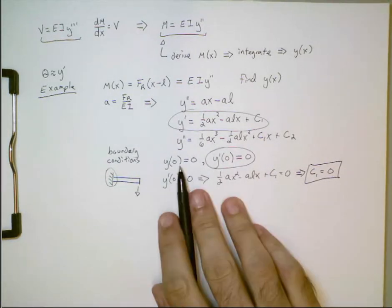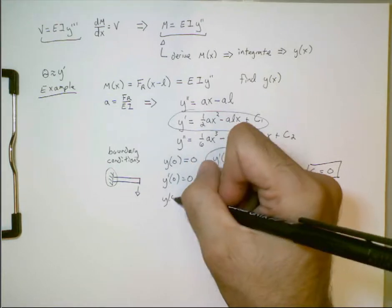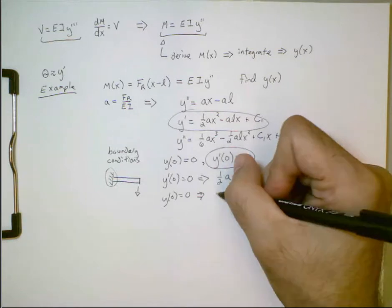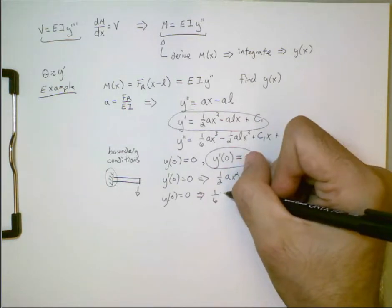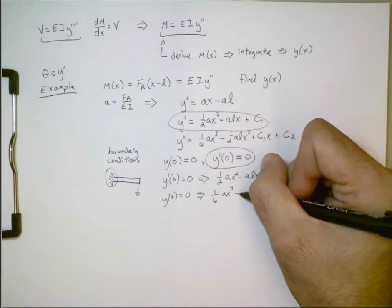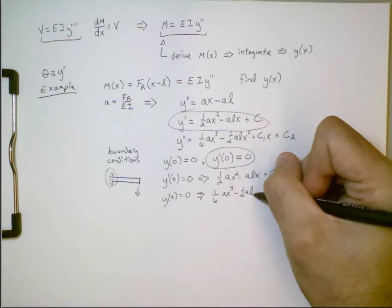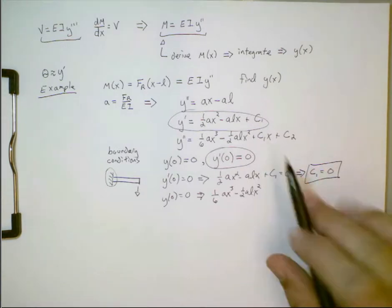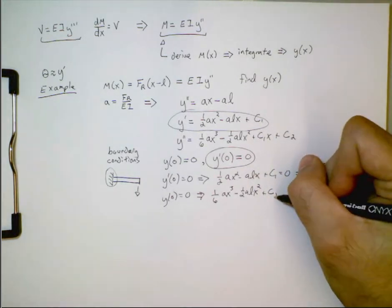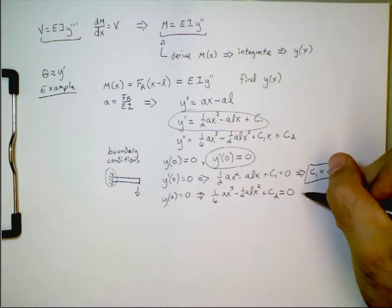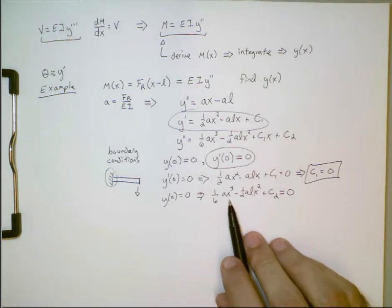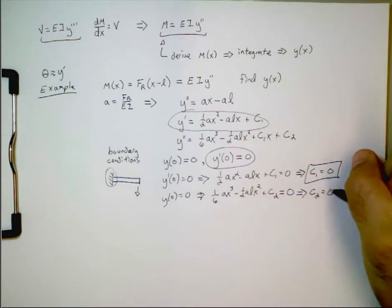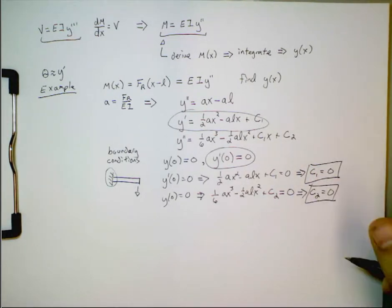Okay. So, now we need to use the second boundary condition. y of zero is equal to zero, and that then will give us this result, one-sixth ax cubed minus one-half alx squared. Now, c1, we know is zero, so we can just add in this c2. That equals zero. Well, if you plug in x equals zero here and here, well, that just makes this very simple. So, c2 is also equal to zero in this case.